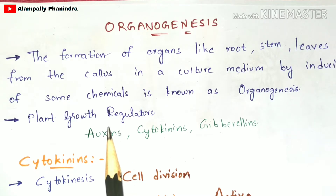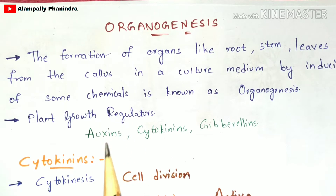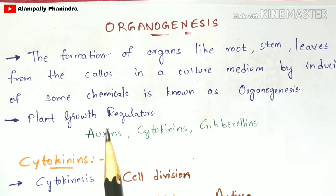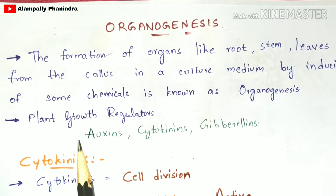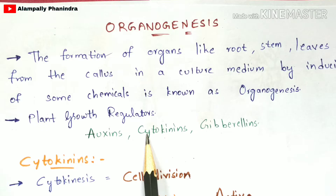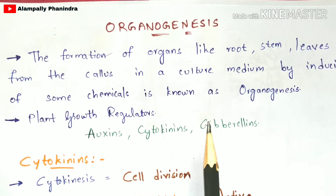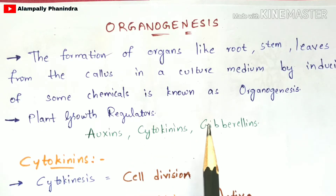Before going into the diagrammatic expression, you need to know about cytokinins — plant growth regulators. There are three types of plant growth regulators: auxins, cytokinins, and gibberellins. These three play different roles, among which auxins and cytokinins play a major and vital role in the organogenesis process.